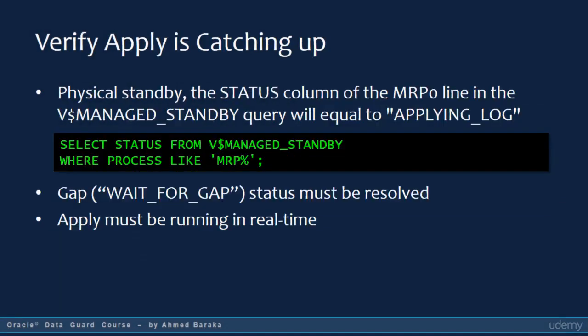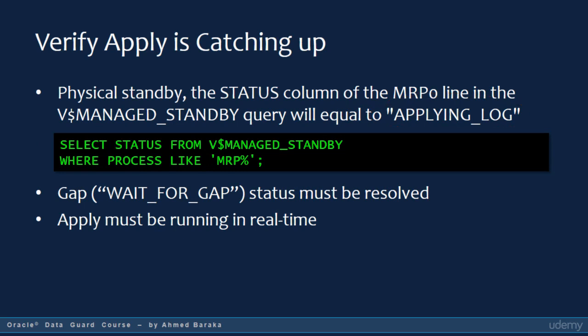If you are planning to switch over to a physical standby database, one way to verify that the apply process is catching up is to look at V$MANAGED_STANDBY — find the MRP process line and check the STATUS column. The value should be APPLYING LOG. If you see WAIT FOR GAP, you cannot switch over until the gap is resolved. In addition, the apply must be running in real time. If you have configured a delay, restart the apply process using the NO DELAY qualifier.